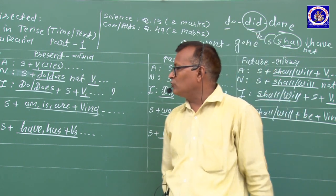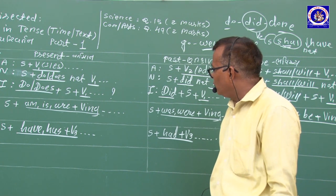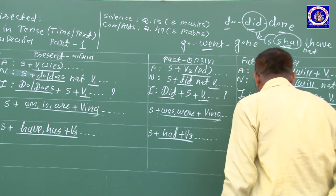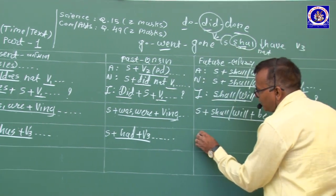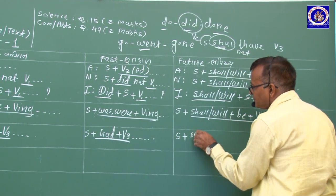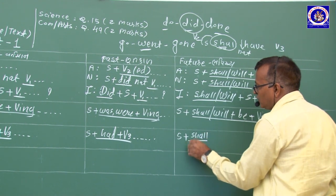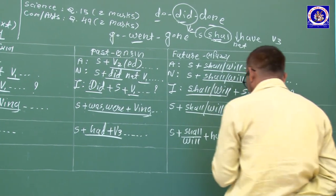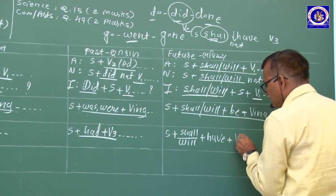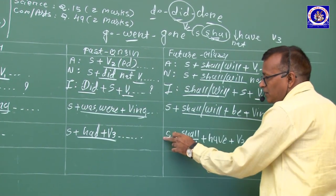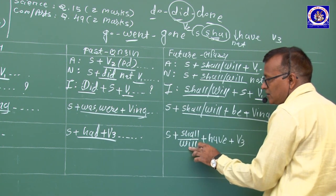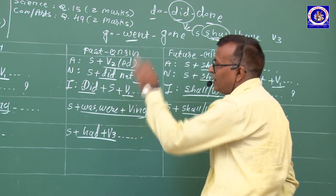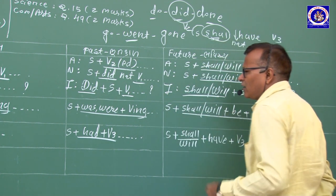ભૂતકાળ (Past Perfect) — Completed action in the past (before another past action). Perfect Future Tense — ભવિષ્ય: shall have/will have + V3. ભવિષ્યમાં ક્રિયા પૂરી થઈ ગઈ હશે.